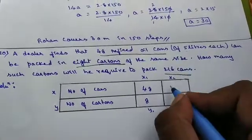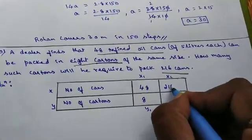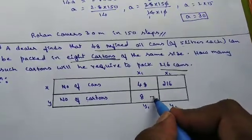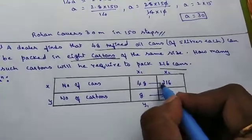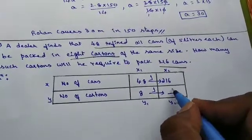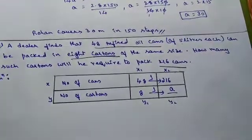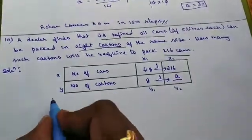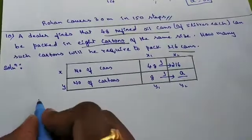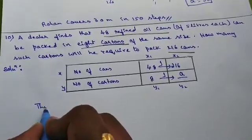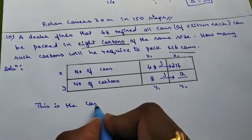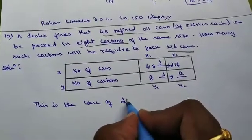And in that way 216 cans requires how many cartons? Yes. As here the number increases therefore number of cartons are also increased. So let me take this is A. So here two quantities are in direct variation because both the quantities are in increasing. So this is the case of direct variation.